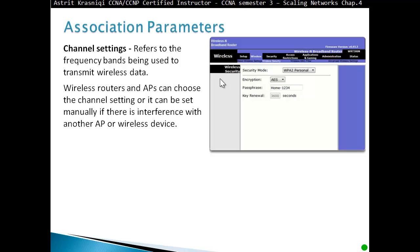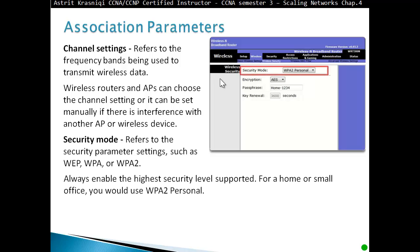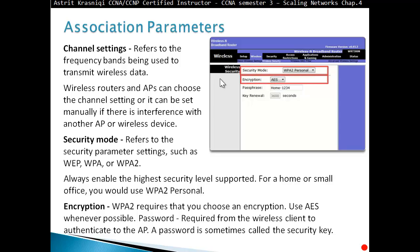Security mode refers to the security parameter settings such as WEP, WPA, or WPA2. Always enable the highest security level supported. For home or small office you should use WPA2 Personal. WPA2 requires that you choose encryption - use AES (Advanced Encryption Standard) whenever possible. Password is required from the wireless client to authenticate to an access point. A password is also called a security key.